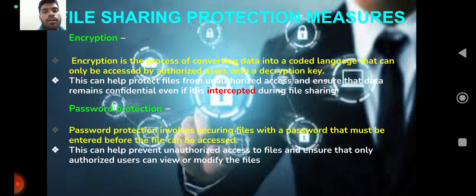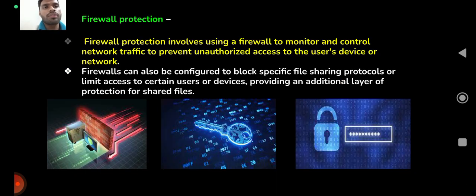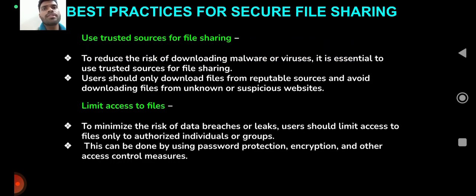Password protection involves securing files with a password that must be entered before the file can be accessed. A familiar example is password-protected PDFs — only when you enter the password will the PDF open. This is one way to protect files from unauthorized access. Firewall protection involves using a firewall to monitor and control network traffic to prevent unauthorized access to a user's device or network. Firewalls can also be configured to block specific file sharing protocols or limit access to certain users or devices, providing an additional layer of protection.